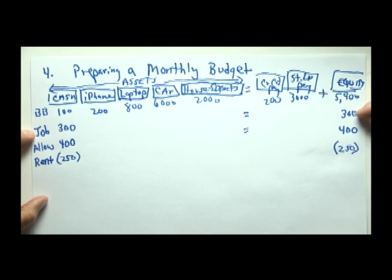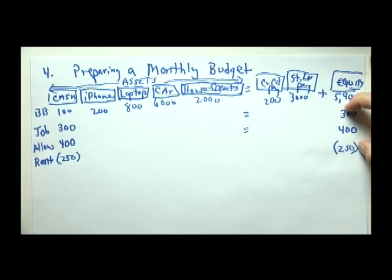Increases in equity over here, the $300 and $400 are revenues. Decreases in equity as a result of normal monthly outflows of cash are called expenses.